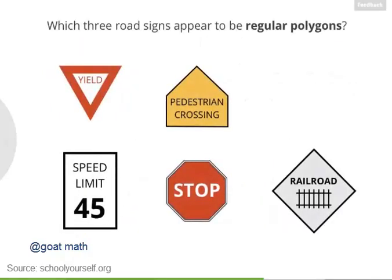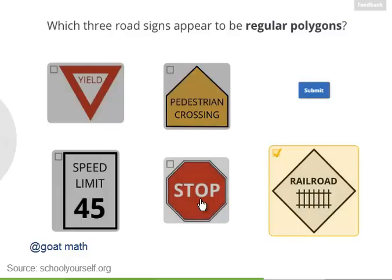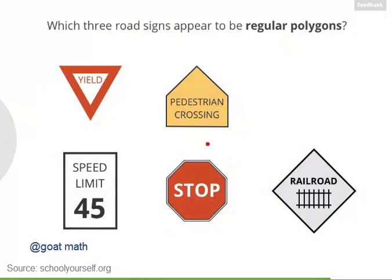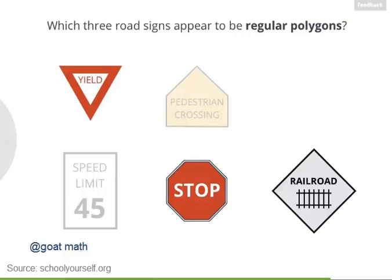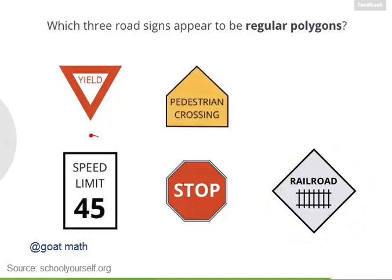As your final challenge, take a look at these five road signs. Three of them are regular polygons — which ones are they? This is a regular octagon with eight equal sides and angles. This is a regular triangle, and this is a regular quadrilateral. This quadrilateral is not regular — not all its sides have the same length. And this pentagon is not regular either.